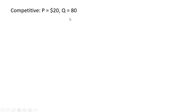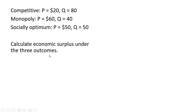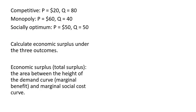To sum up: the competitive outcome, the monopoly outcome — both of which ignore the externality — and the socially optimal outcome. We now want to calculate economic surplus under the three outcomes. Total surplus is the area between the height of the demand curve, which represents marginal benefit, and the marginal social cost curve.